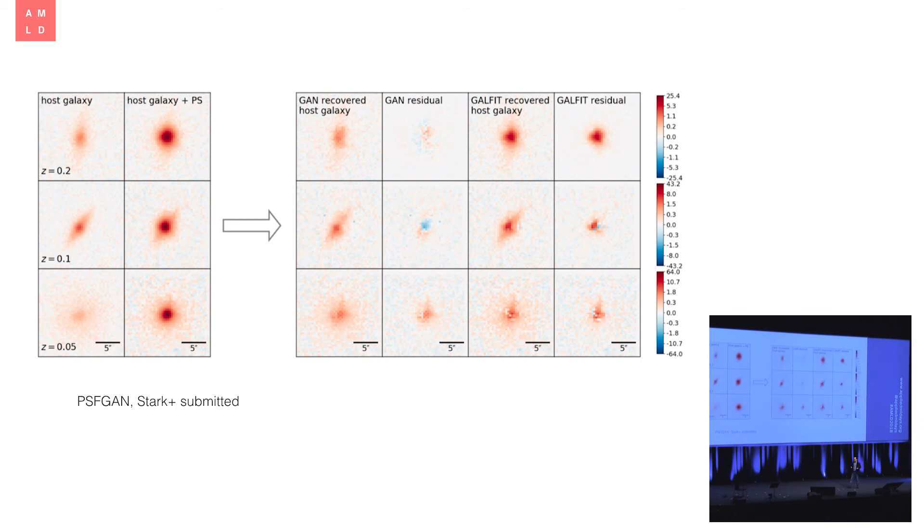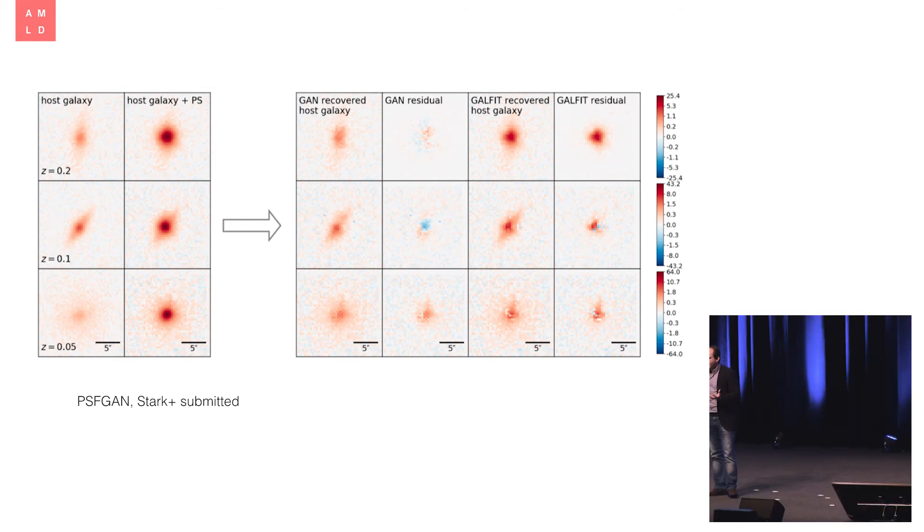We compared it to the state-of-the-art parametric fitting tool. It works really well. It works far better than the state-of-the-art tool, the parametric fitting tool, in the regime where the quasar is very bright compared to the host galaxy, which is the most interesting ones. These are literally the brightest things in the universe. And now we have a better view on them.